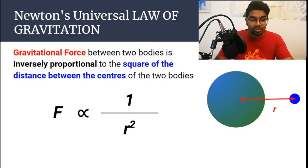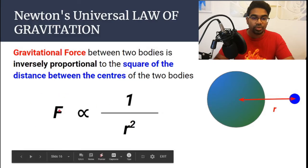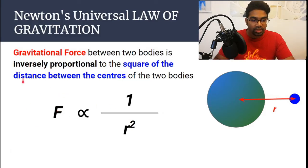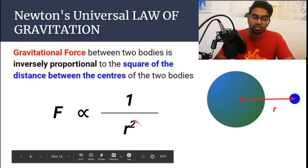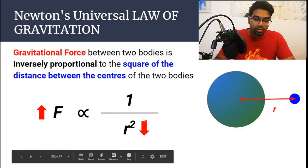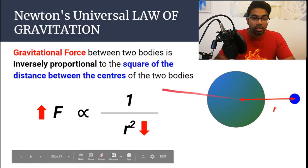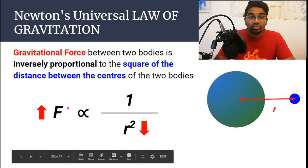The second thing is that the gravitational force between the two bodies is inversely proportional to the square of the distance between the centers of the two bodies. So the distance between the centers of the two bodies is represented by r, and the gravitational force is inversely proportional to r squared. This means that when r is reduced, when the distance between the two centers of the object becomes smaller, the gravitational force will become stronger.